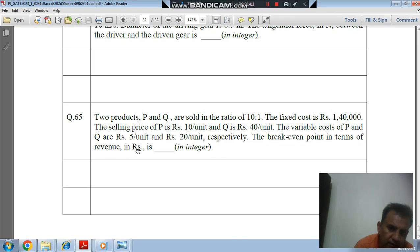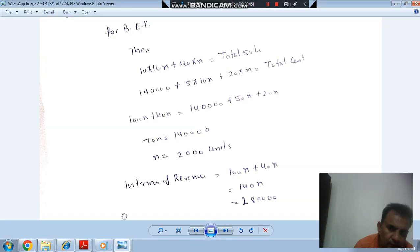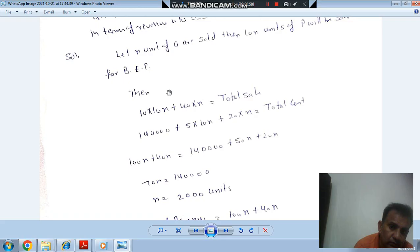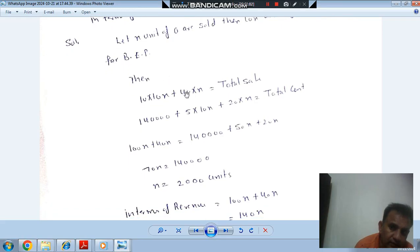So here, let X be the number of units of Q sold, and then the number of units of P sold will be 10X. For break-even point, total sale should be equal to total cost.